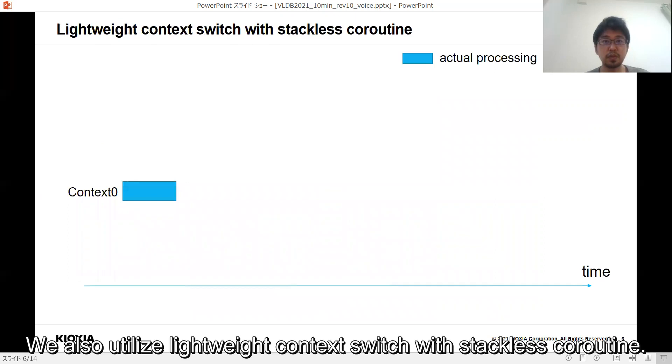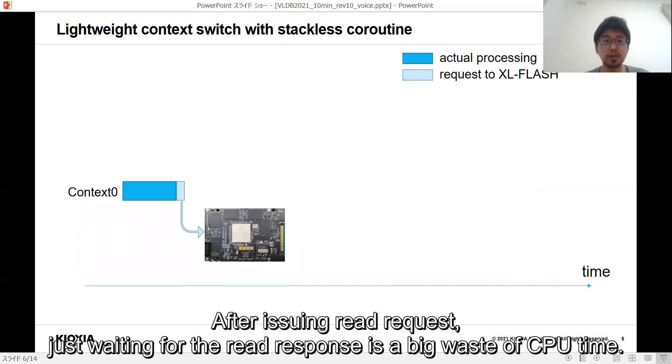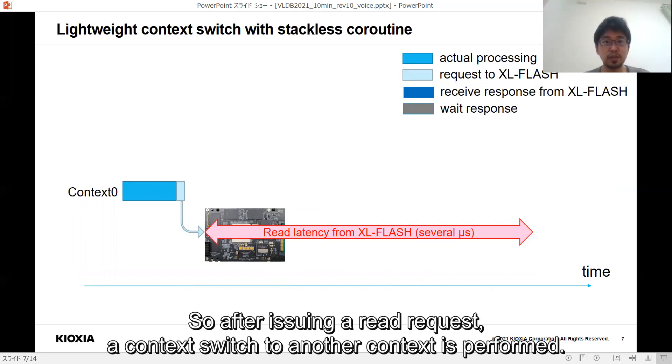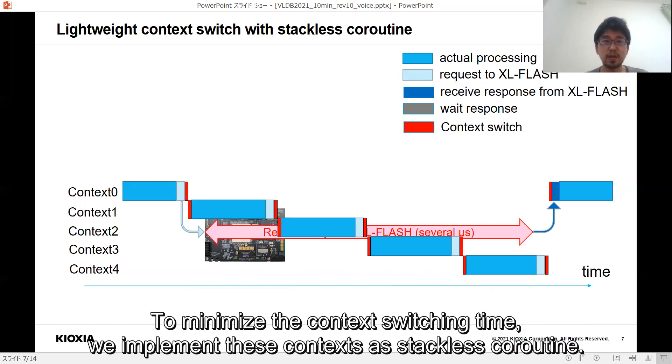We also utilize lightweight context switches with stackless coroutines. XL-FLASH has microsecond level read latencies. After issuing read requests, just waiting for the read response is a big waste of CPU time. So, after issuing a read request, a context switch to another context is performed. After enough time passed, the execution returns to the initial context and receives a response. To minimize the context switching time, we implement these contexts as stackless coroutines.